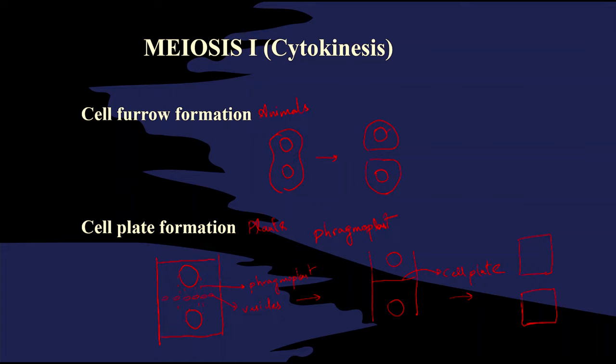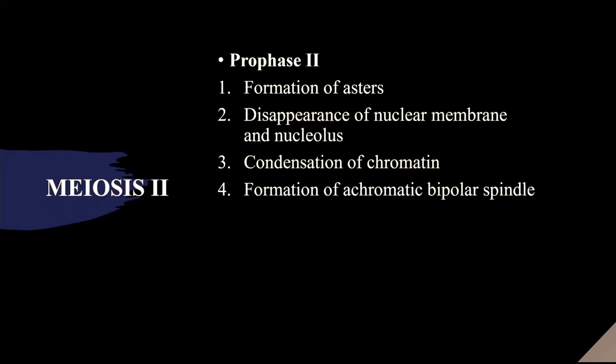That's all about meiosis I. We have discussed about karyokinesis and cytokinesis. Now let's enter into meiosis II. In meiosis I, we got two cells after cytokinesis.